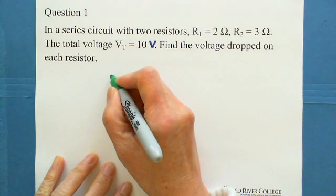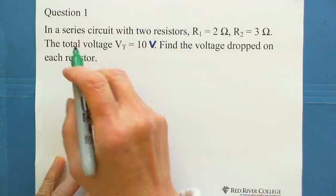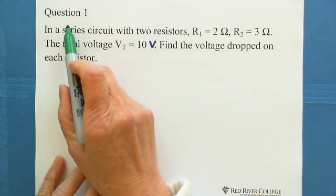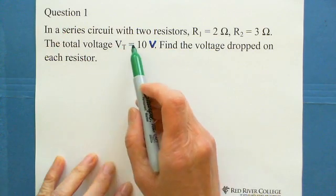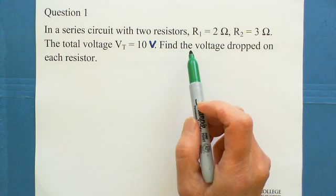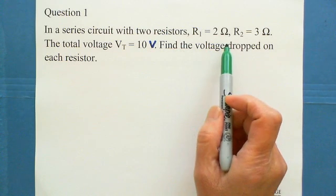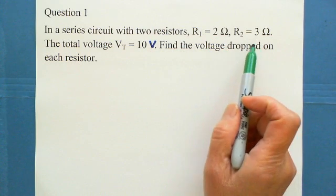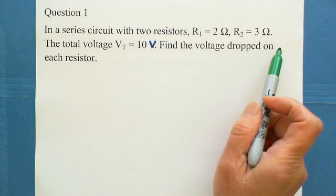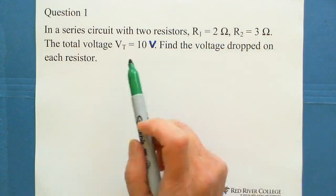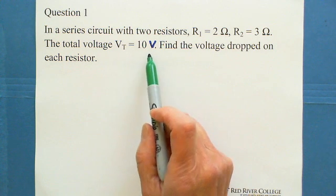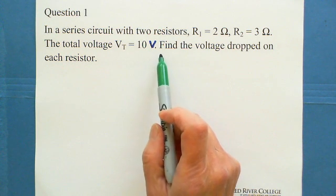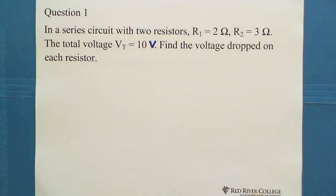So for example, this question. In a series circuit with two resistors, R1 equals 2 ohms, R2 equals 3 ohms. The total voltage equals 10 volts. Find the voltage dropped on each resistor.